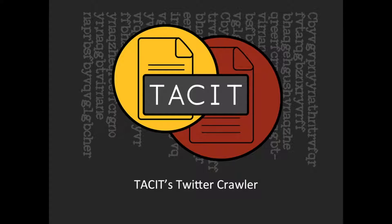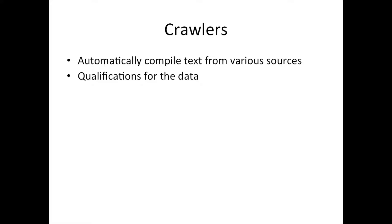Hi, today we will be talking about Tacit's Twitter crawler. Tacit comes prepackaged with several crawlers. Crawlers allow you to automatically compile text from various sources. You can search for specific words, topics, or categories and apply various qualifications to the data you are downloading.